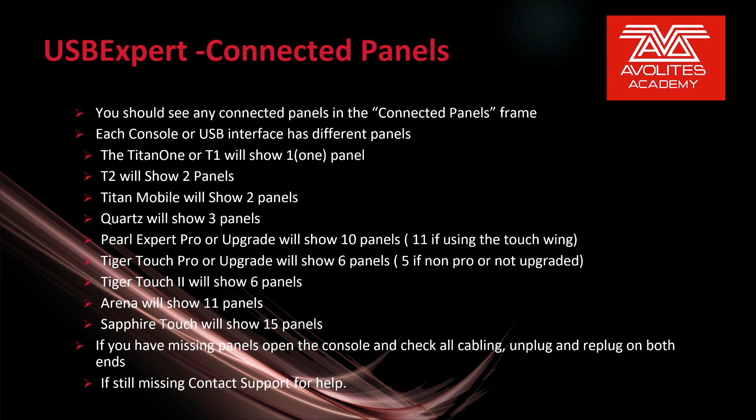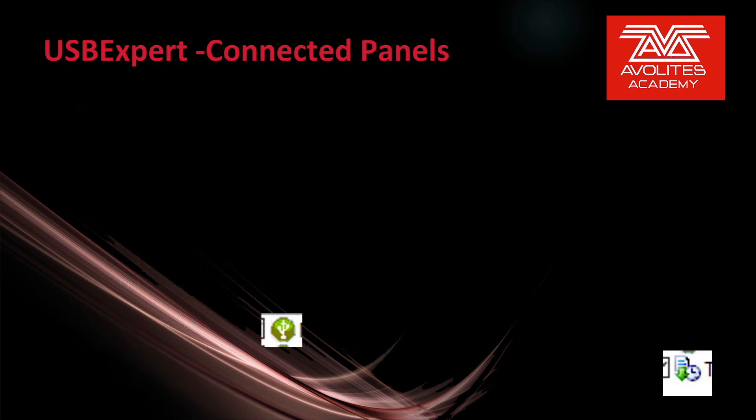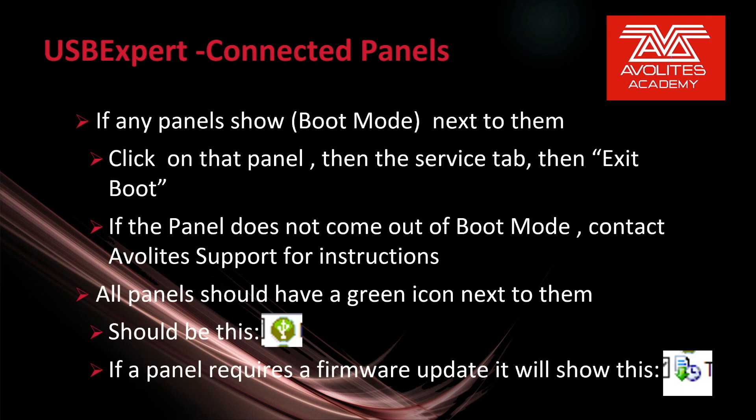If you have missing panels, open the console and check all cabling — unplug and re-plug the cables on both ends. If they're still missing, contact support for more help. If any panels show boot mode next to them, click on that panel, then the Service tab, then Exit Boot. If the panel does not come out of boot mode, contact AvaLights Support for instructions.